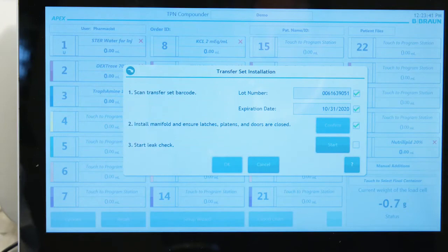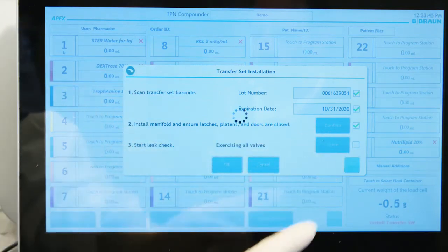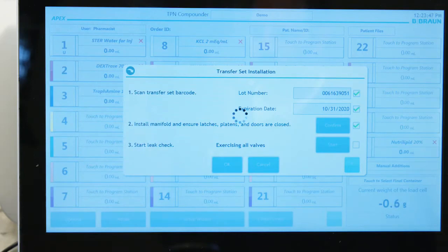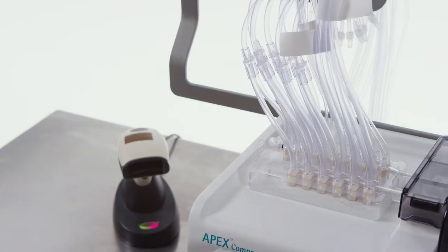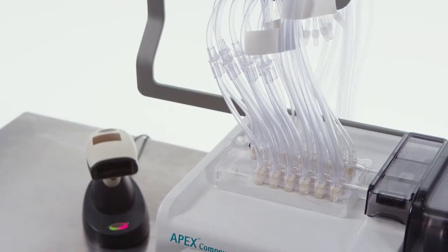Tap start to start the leak check. In the first part of the leak check, APEX will display the message exercising all valves while it rotates each valve of the transfer set. This step will take approximately two minutes.